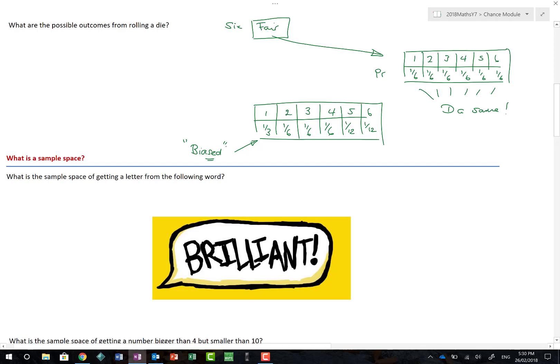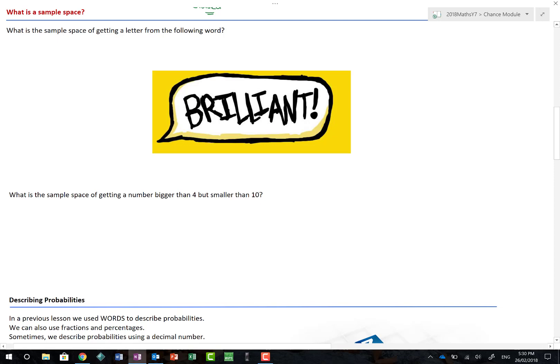So, what are the possible outcomes from rolling a normal dice? We've already said: 1, 2, 3, 4, 5, and 6. Now, if we remember with things called sample space, what is a sample space? Well, a sample space, as far as I'm concerned, or as I teach it, is effectively a list of possible outcomes separated by commas and sit inside a pair of curly brackets.